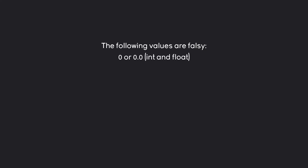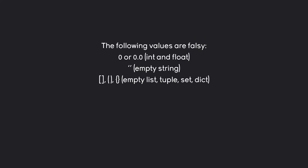Some values will always be converted to false and those are fairly specific — anything else will always be true. Falsy values are 0 or 0.0, any kind of empty string without any content, any kind of empty list, tuple, set, or dictionary, and finally None — the absence of a value. Literally any other value is going to become true, meaning you don't actually have to learn that much. Let's have a look at all of this in code.